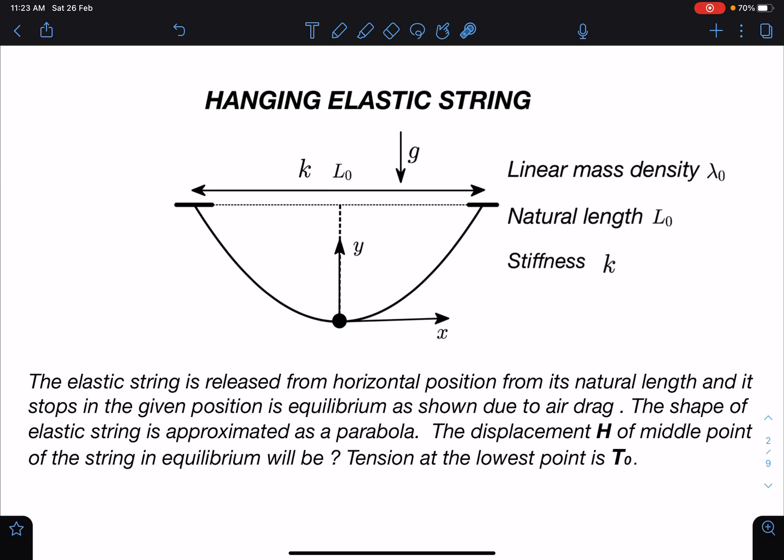This assumption is very important here. The displacement H of the middle point of the string, so we are talking about this displacement H of the string in equilibrium will be found, and tension at the lowest point is given as T₀. The linear mass density λ₀, natural length L₀, and stiffness k are given.